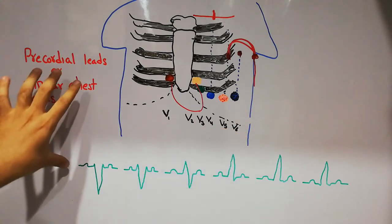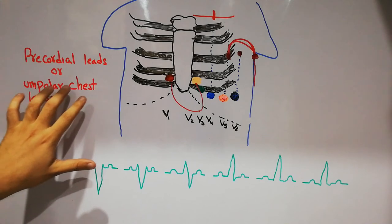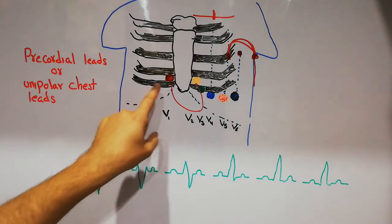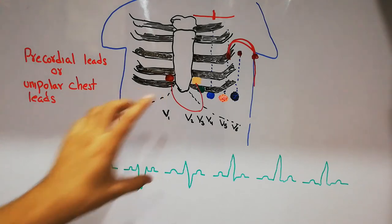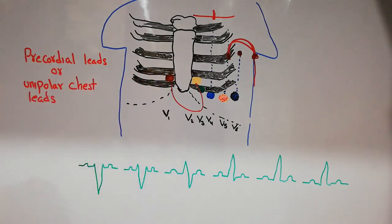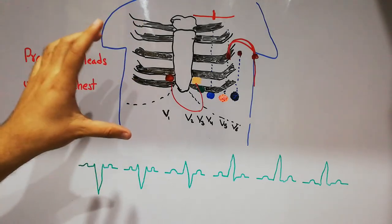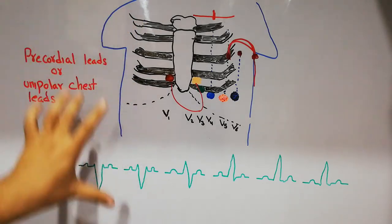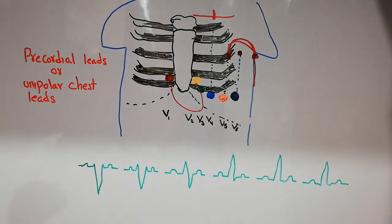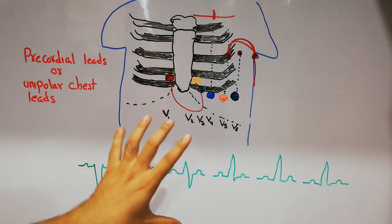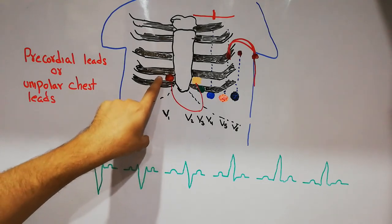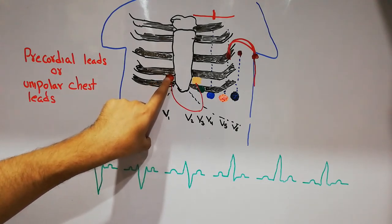To summarize: the precordial leads are unipolar because only one active electrode records the reading, connected to an indifferent electrode formed by combining all three limb leads — the right arm, left arm, and left foot. The chest leads are six in number. V1 is present in the fourth intercostal space on the right side of the sternum.